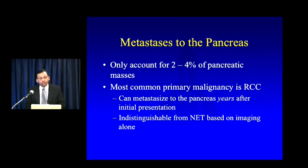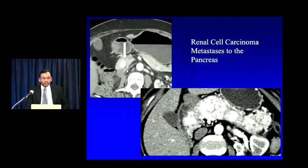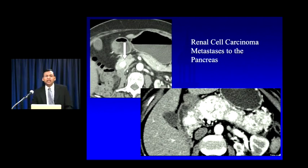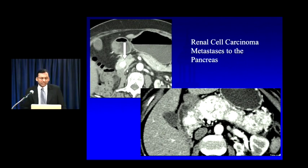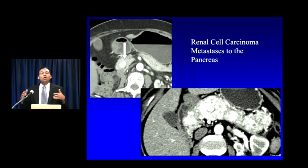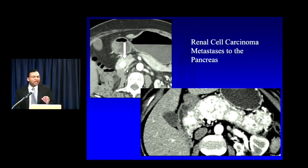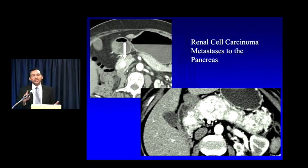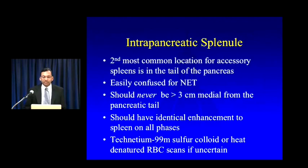The most common mimic of a pancreatic neuroendocrine tumor — and one that comes up frequently in my practice — is metastatic disease to the pancreas, classically renal cell carcinoma. RCC can metastasize to the pancreas years after initial presentation, and because clear cell RCCs are fundamentally hypervascular tumors, a hypervascular RCC metastasis will look indistinguishable from a neuroendocrine tumor on imaging alone. What drives you to the right diagnosis is the patient's history. Here are two examples — both look like NETs — but in both cases, the right kidney is missing: this patient had a prior nephrectomy, and these are RCC metastatic lesions.